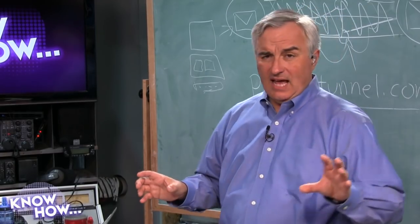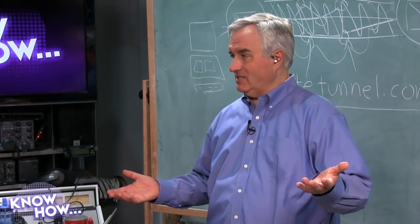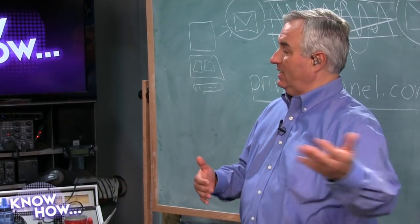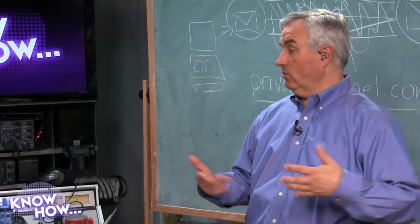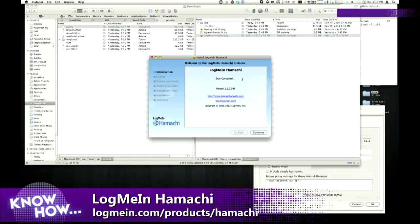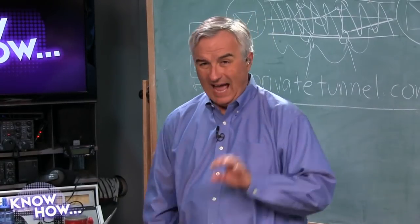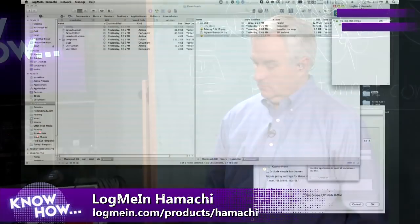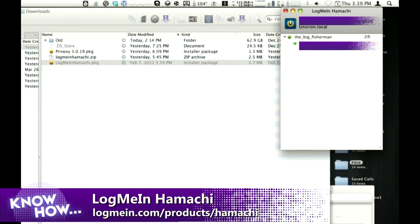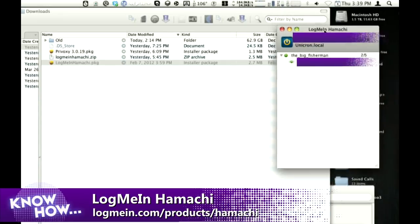Hamachi is still available free for up to five users; beyond that you have to pay. To get started, download it — it's free. After installing, you'll see a small window that says LogMeIn Hamachi. I've created a network called 'The Big Fisherman' — you can see it has two out of five users connected, and another computer called Rumble, which is actually my laptop. So Rumble looks like it's right next door, but it's actually my home computer on the other side. You just go to Network, create a new network, give it a name and a secure password, then send invites to the people you want to include.